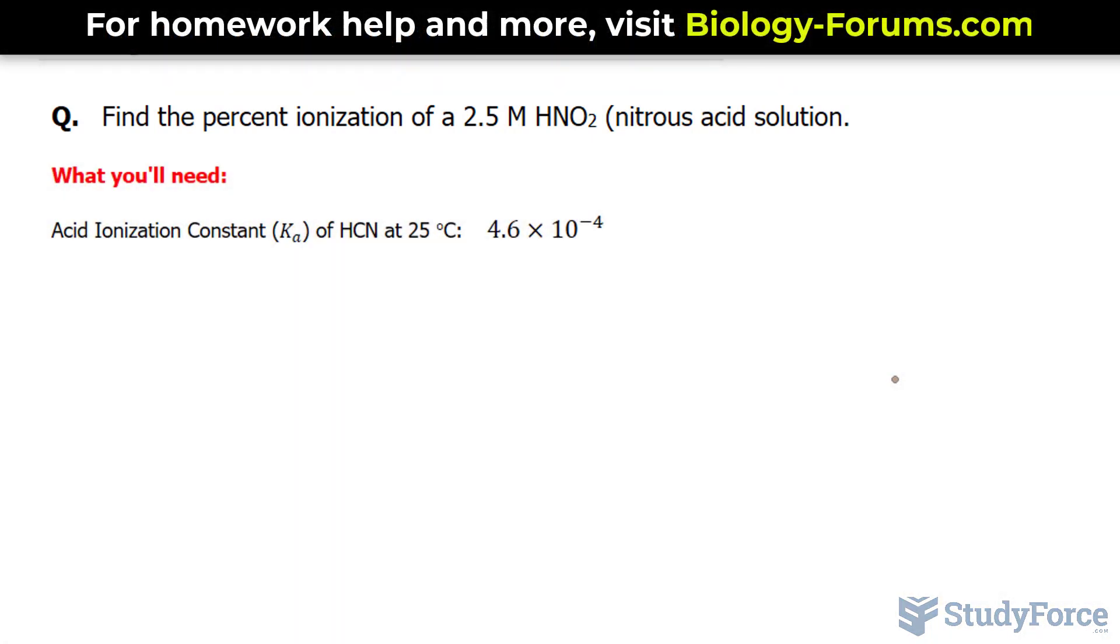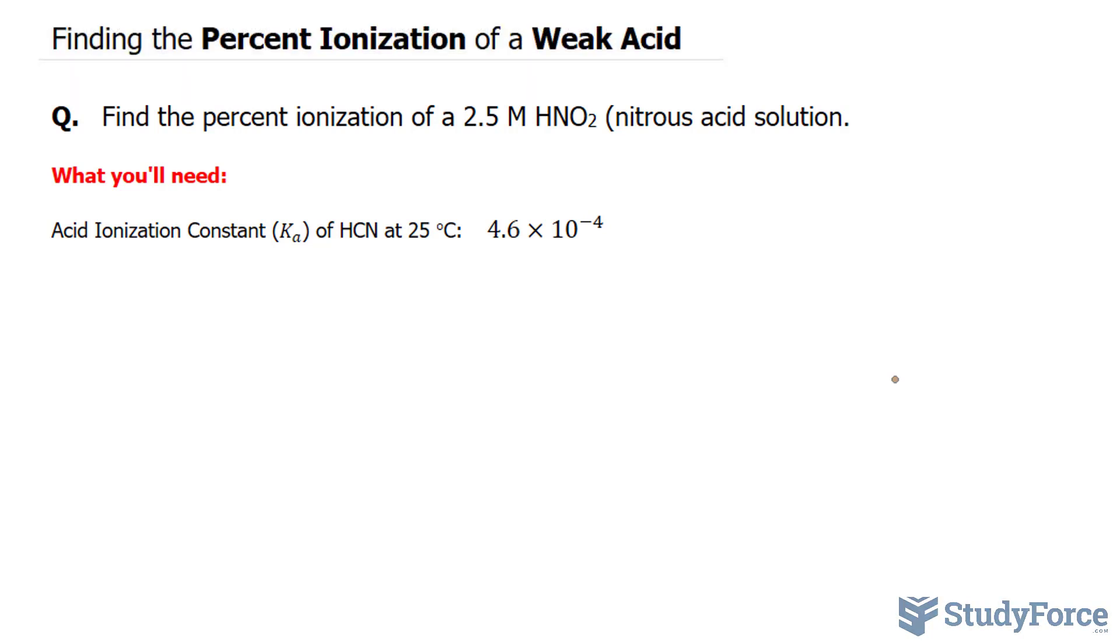To find the percent ionization, you must find the equilibrium concentration of hydronium. When this acid dissociates, it will dissociate into the conjugate base and H3O+. Let's go ahead and find the concentration of H3O+.